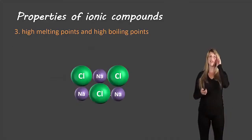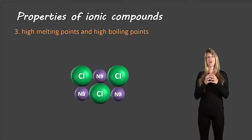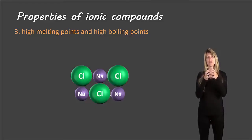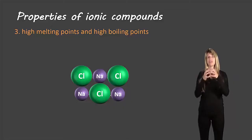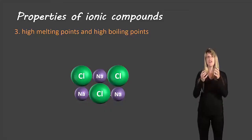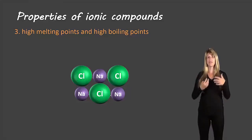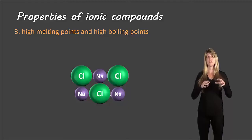The next characteristic is that ionic compounds have high melting points and high boiling points. When something melts, the formula units start to separate from each other and move independently rather than being together as a block. Because each formula unit is strongly attracted to the others due to those positive and negative charges, it's hard to pull them apart, giving ionic compounds a high melting point. A similar process occurs at boiling.